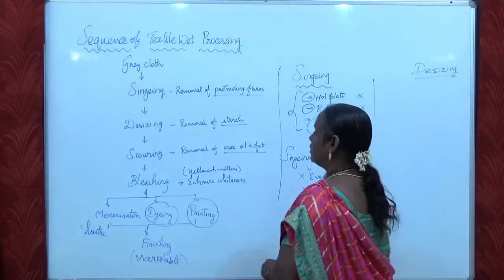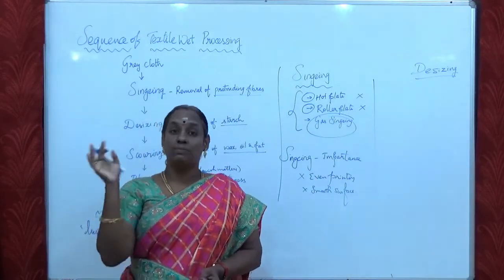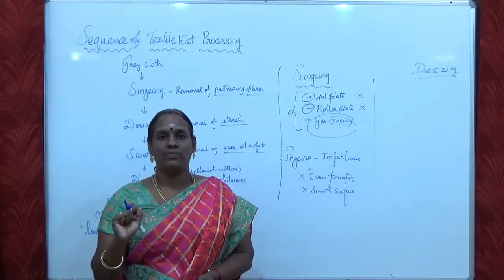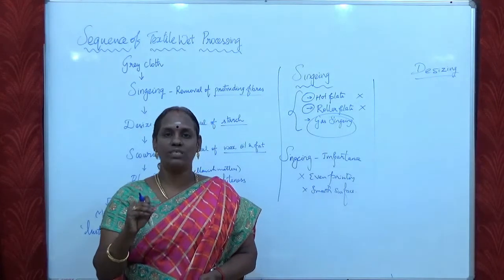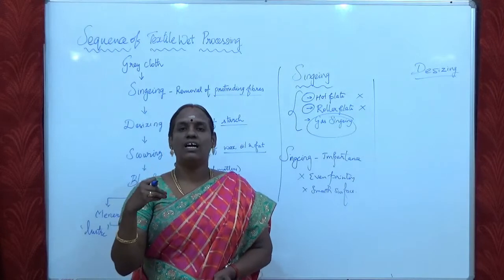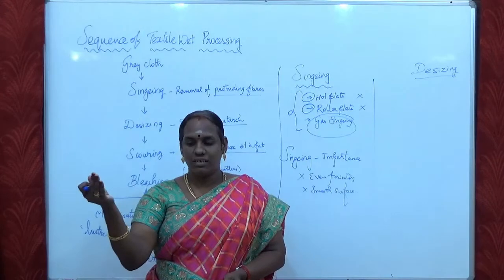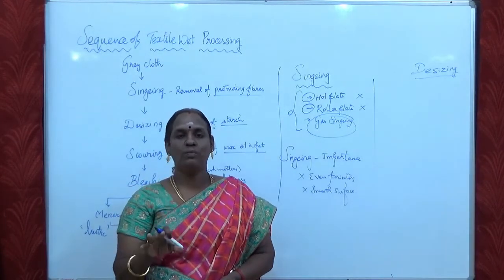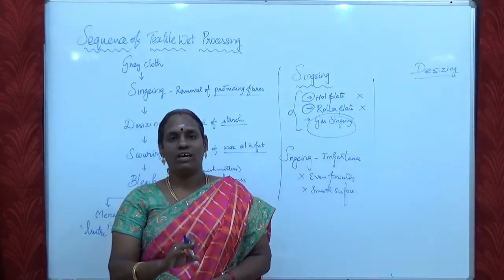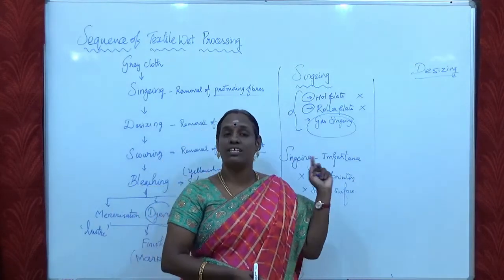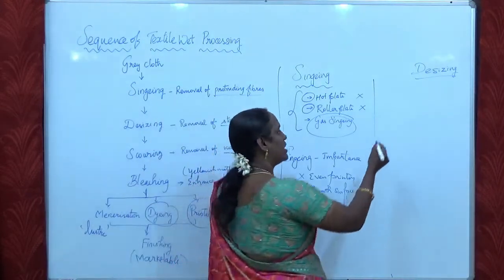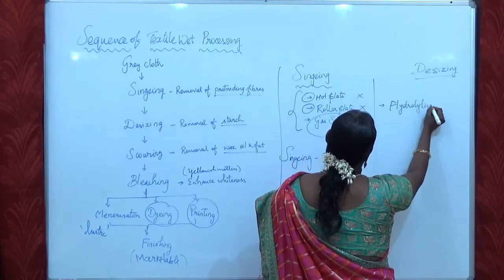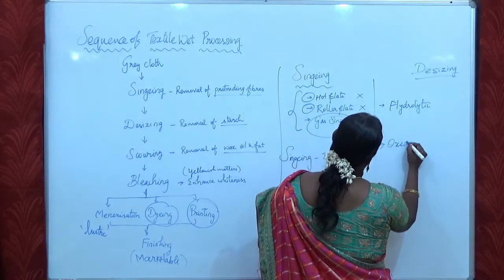Sizing is the process of applying starch to the warp yarn before weaving, while desizing is the process of removal of starch from the fabric. The starch present in the fabric reduces the absorbency of the cloth. If starch is not removed, it reduces the absorbency of dyes and we cannot dye or print the fabric perfectly. To increase absorbency, the starch must be removed through desizing. There are two types of desizing: hydrolytic desizing and oxidative desizing.